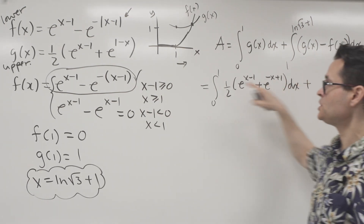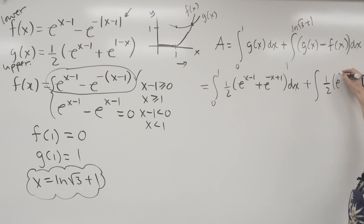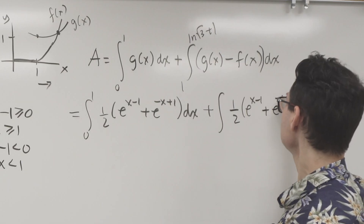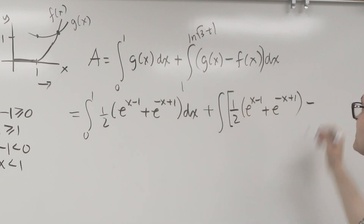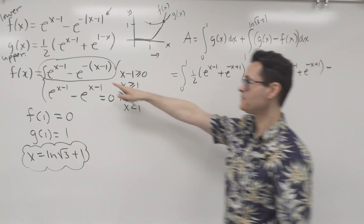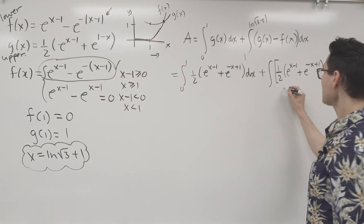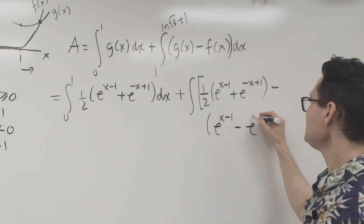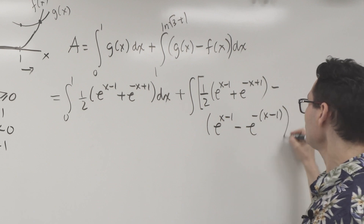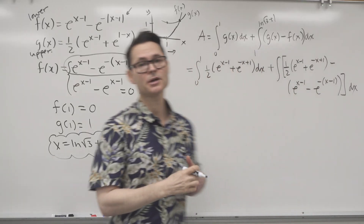Plus the integral from 1 to ln(√3)+1 of {(1/2)[e^(x−1) + e^(−x+1)] minus [e^(x−1) − e^(−(x−1))]} dx. That's the construction of the integral, and now the process is to integrate.